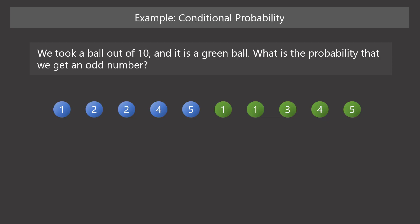Let's consider another example. Suppose we have 10 balls, 5 of them are blue and 5 are green, all numbered in this way. Suppose we took a ball out of 10 and it is a green ball. In this case, what is the probability that we get an odd number?